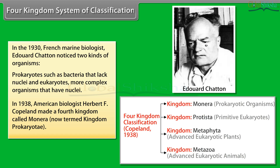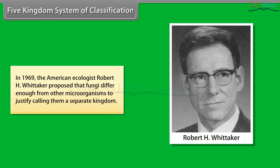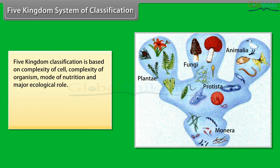In 1969, the American ecologist Robert H. Whittaker proposed that fungi differ enough from other microorganisms to justify calling them a separate kingdom. This led to a five kingdom scheme comprising Monera, Protista, Fungi, Plantae, and Animalia. Five kingdom classification is based on complexity of cell, complexity of organism, mode of nutrition, and major ecological role. Whittaker's scheme is still widely accepted as a logical classification of living things.